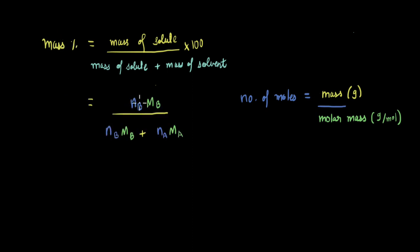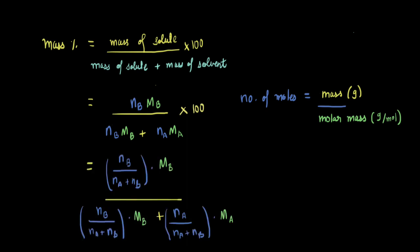We rewrite mass percent as NB times MB — the mass of the solute — divided by the mass of solute plus mass of solvent A, times 100. The denominator of the mole fractions contains the sum of moles, NA plus NB. So let's divide both the numerator and denominator throughout by NA plus NB. This gives us NB divided by (NA plus NB), times MB in the numerator, and a similar term for A in the denominator. We can now see that NB divided by (NA plus NB) equals XB, and NA divided by (NA plus NB) equals XA.